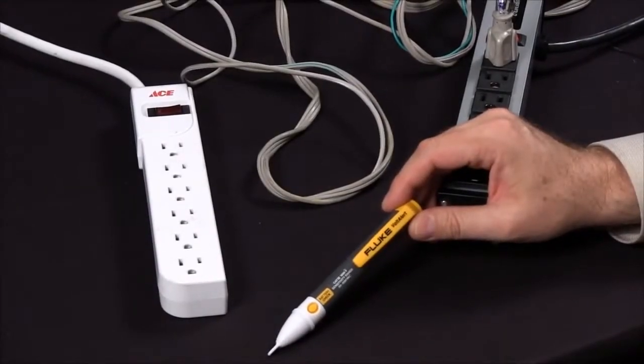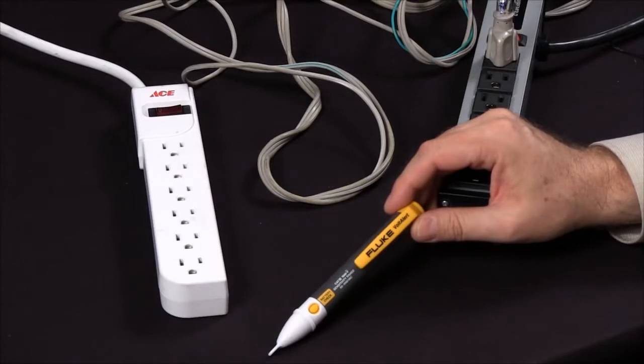How do I find an open circuit using the Fluke 2AC Pocket Volt Detector? There are several tests you can make.